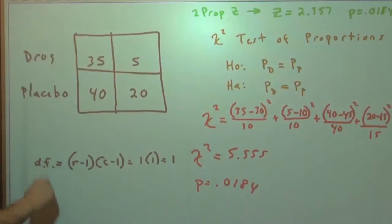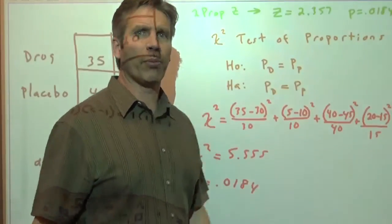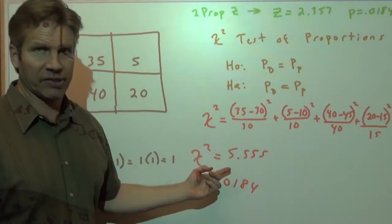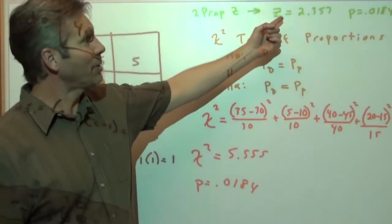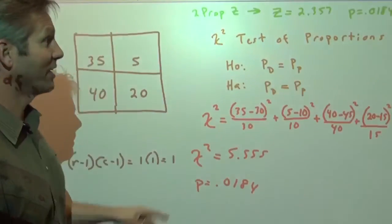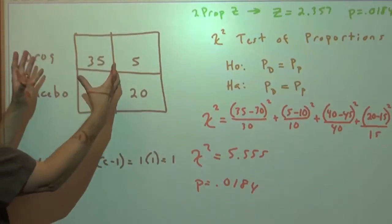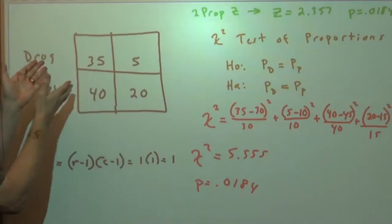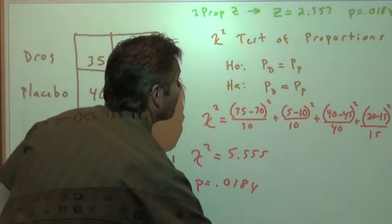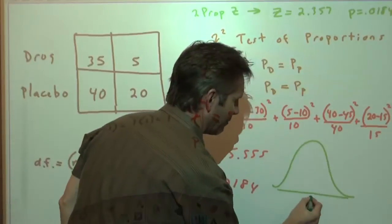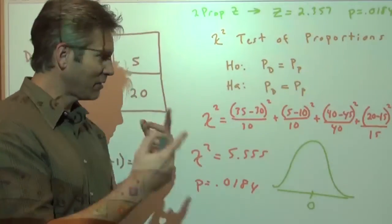But hold the phone. Look at that. We got the exact same p-value with the chi-squared test of proportions as we did with the two-proportion z-test. Wait a minute. But these are different. This chi-squared statistic is different from that z-score. But you know what? I wonder what would happen if we squared that z-score. Maybe you guessed it. If you square that z-score, you get 5.555 because this two-way table that we're using for the chi-squared test of proportions is utilizing the same information, including a pooled p-hat, to run the test and analyze it.